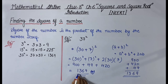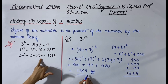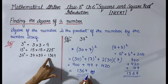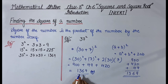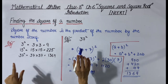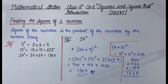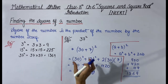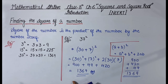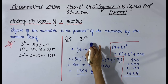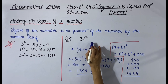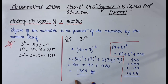So the square of 37 is 1369. When we multiplied 37 by 37 directly, the answer was also 1369. The answer is the same, confirming the method works. When we need to find the square of a large number and direct multiplication is difficult, or when the question says to find the square without multiplying, we use this method: split the number, use the identity, and get the answer.